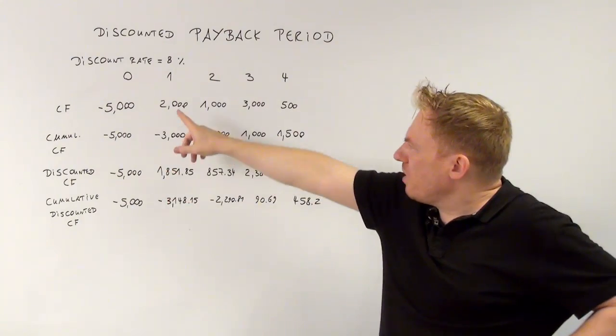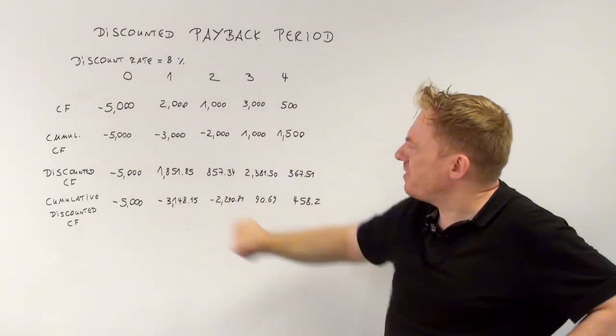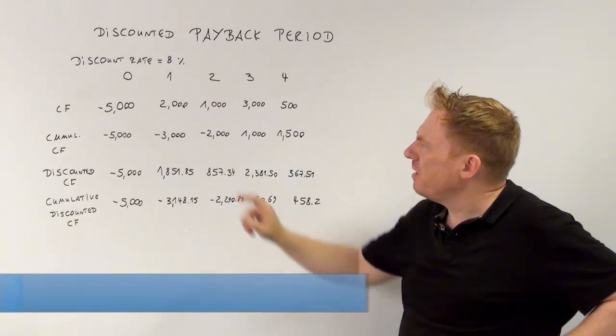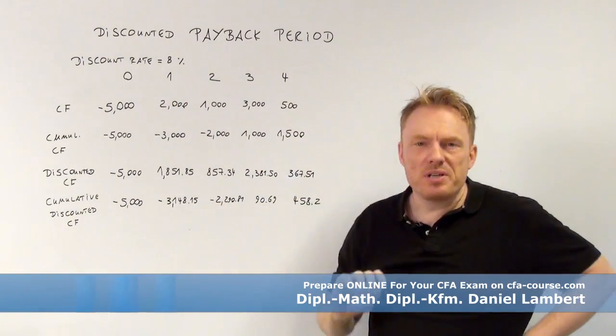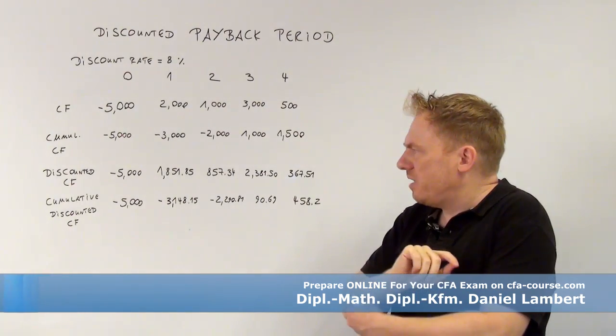So now, $2,000 in period one equals this, equals this amount of money. Because $2,000 divided by 1.08 equals this, $1,851.